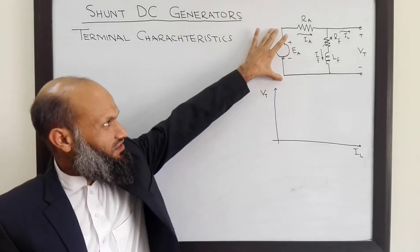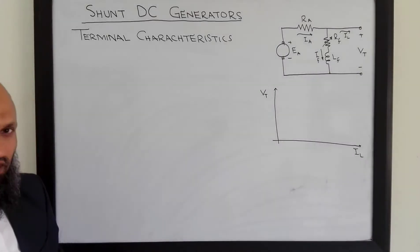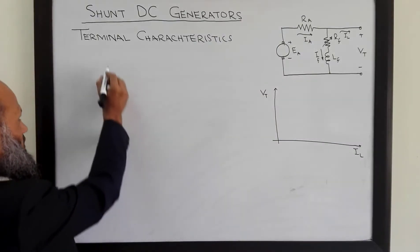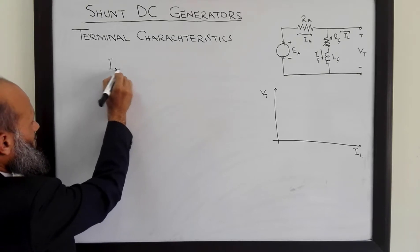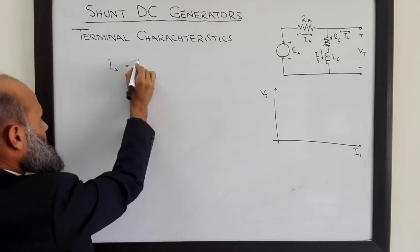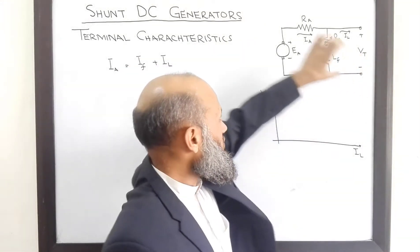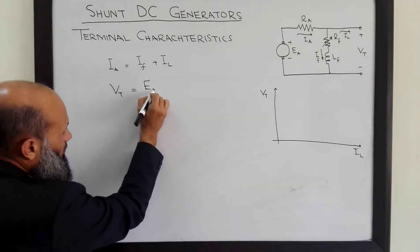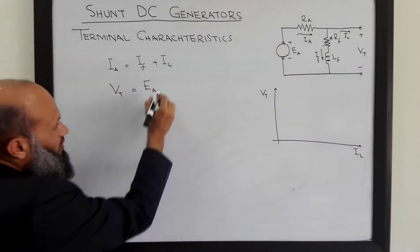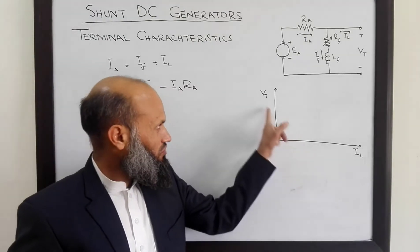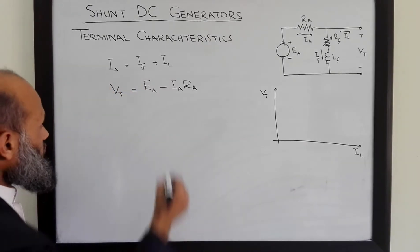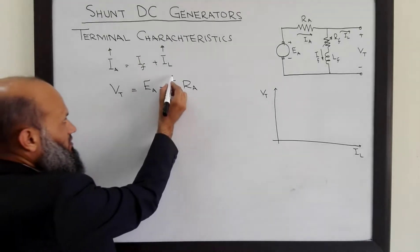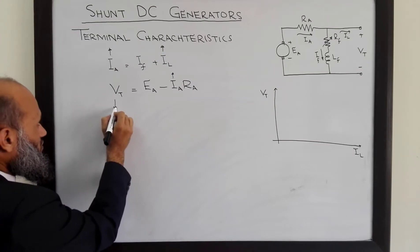Terminal characteristics of shunt DC generators are different from the terminal characteristics of separately excited DC generators. In the case of shunt DC generators, armature current Ia is the sum of field current and load current. We also remember that terminal voltage is related to generated voltage by this relation: Vt is equal to the generated voltage minus the voltage drop across the resistance of the armature winding. So, if load current is increased, armature current will also increase, and that increase will result in a decrease in the terminal voltage.